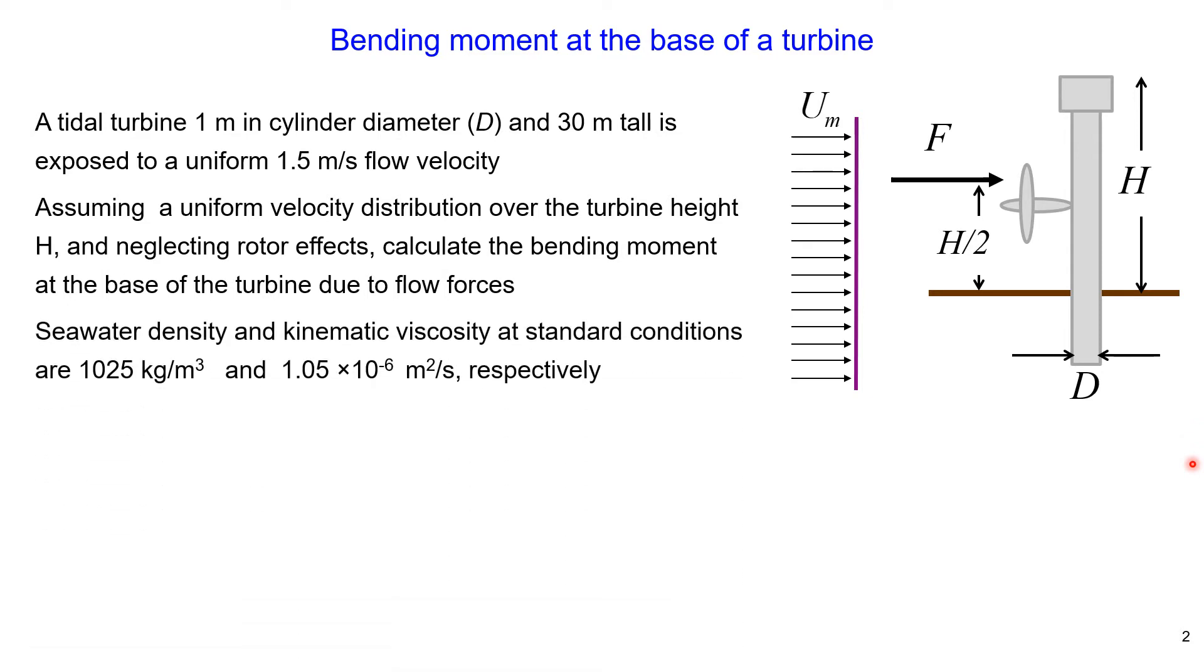We take seawater density and kinematic viscosity at standard conditions. The bending moment at the base of the turbine can be calculated using the following formula. The bending moment equals drag force multiplied by the distance from the base up to the point where the total force acts. Because we have uniform velocity distribution, this distance equals exactly half of the turbine height.